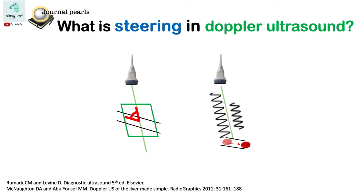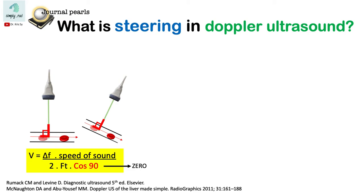What is steering in Doppler ultrasound? At an angle of 90 degrees, as in this case or in this orientation, there is no relative movement of the target towards or away from the transducer.